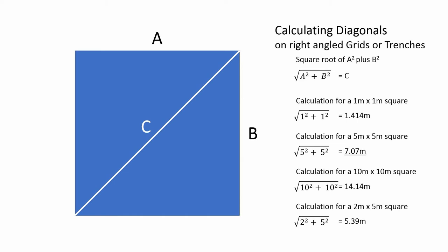You can do this for almost anything that you want to do. The ones that I find most useful, and so will you, are the 1 meter square, the 5 meter square, and, of course, the 10 meter square. These are useful for laying out trenches and grids.